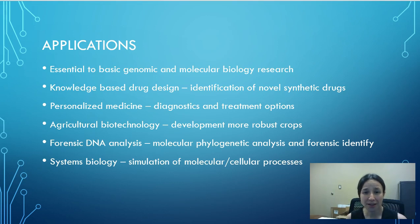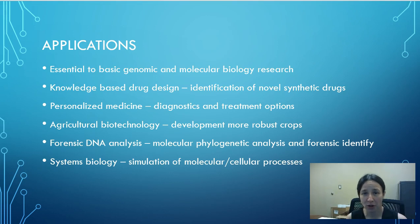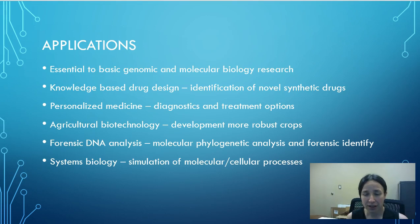Understanding those variations allows us to personalize treatment options for cystic fibrosis patients, for example. We can also customize crops through agricultural biotechnology — making crops resistant to Roundup, able to withstand freezing better, or to produce things we want such as higher nutrient contents. We can also use biotechnology and bioinformatics for forensic DNA analysis, molecularly looking at the phylogeny of samples and identifying where they came from.